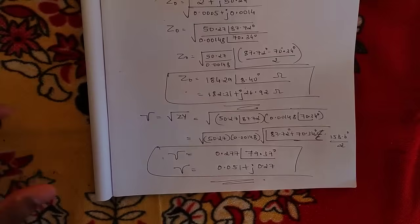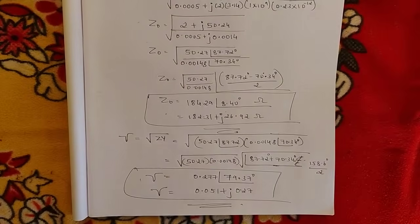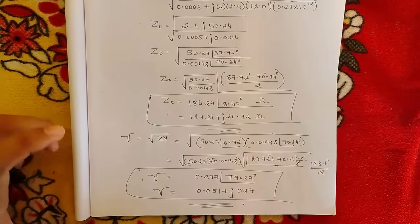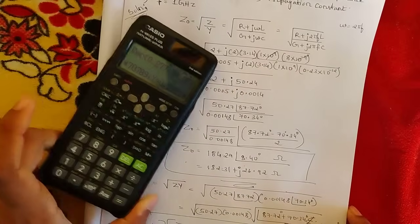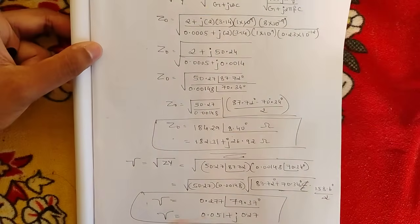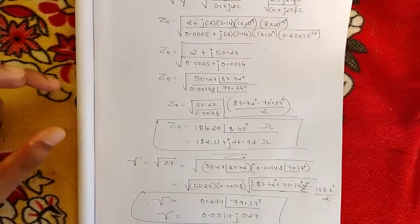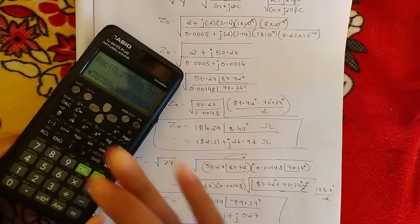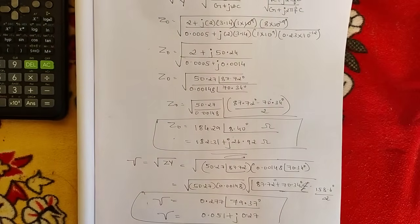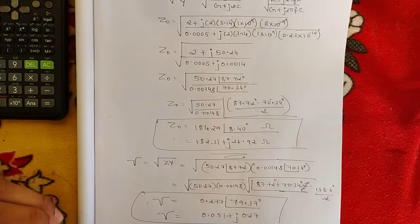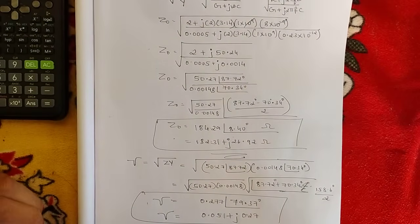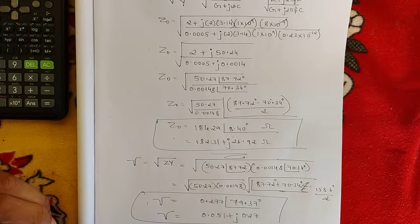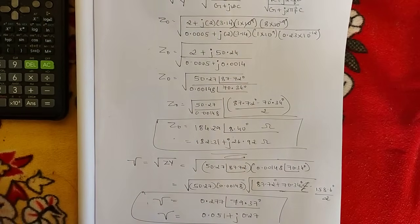So the final answers are: characteristic impedance Z0 = 184.29∠8.40° = 182.31 + j26.92 ohms, and propagation constant γ = 0.277∠79.37° = 0.051 + j0.27. Please go through this problem again and follow the calculator steps. Two more problems will be solved in the upcoming videos. Thank you — like, share, and subscribe.